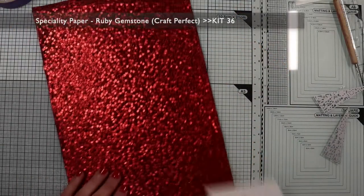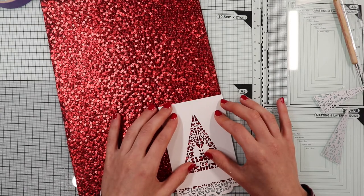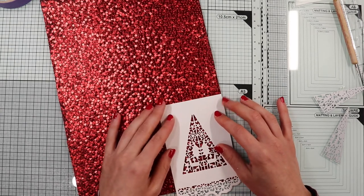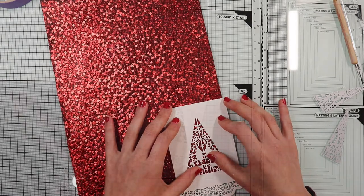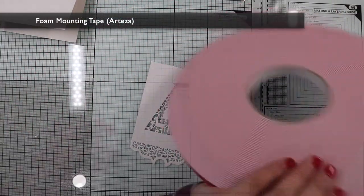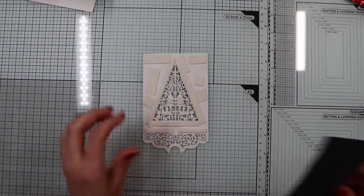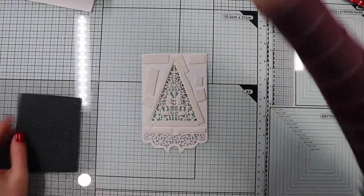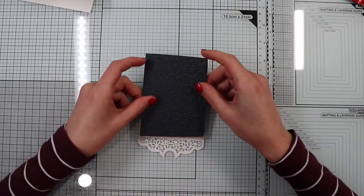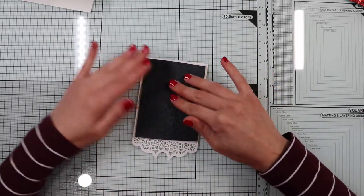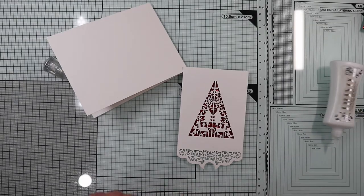This banner can easily become a shaker card. I'm going for a window card, so I'm going to choose the background for my intricate window. I go with this beautiful red berries cotton paper from the kit. I'll give the banner some dimension by using the foam tape on the back. So I'm going to stick a piece of red cotton paper.